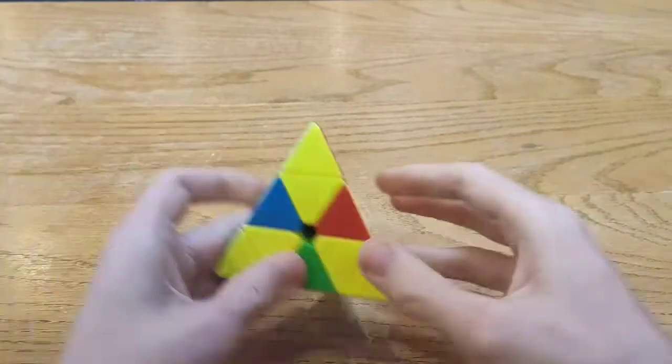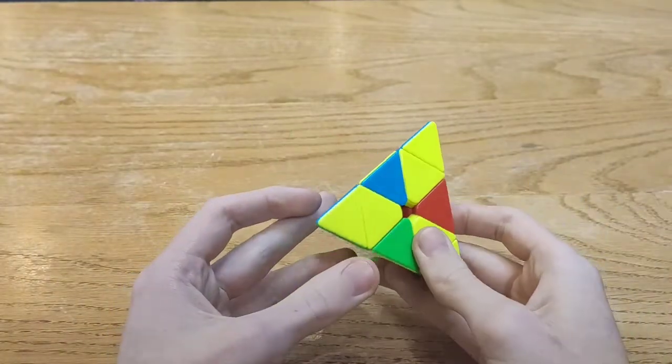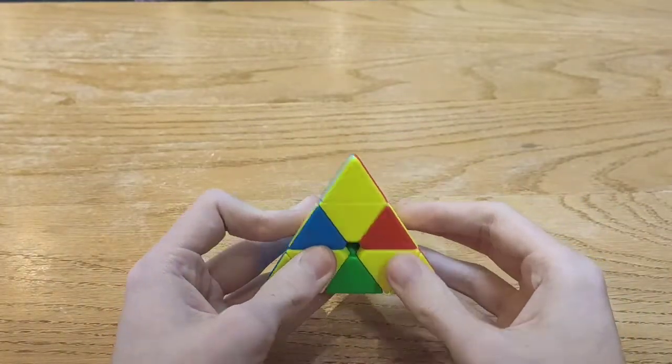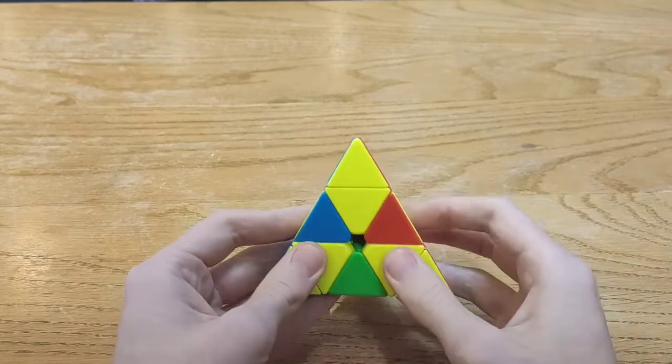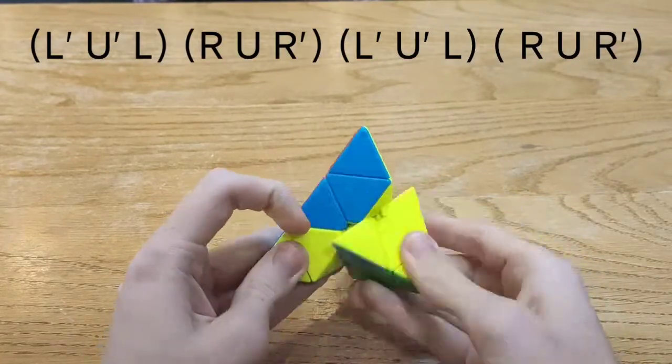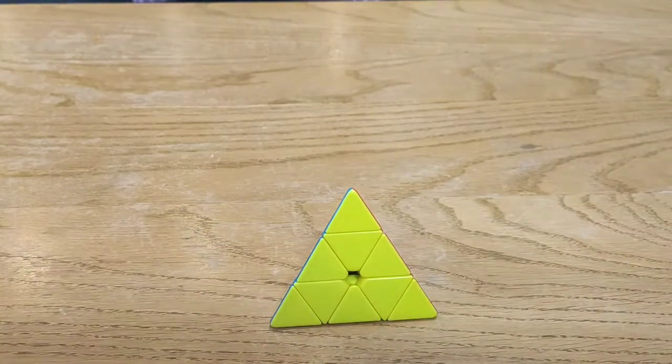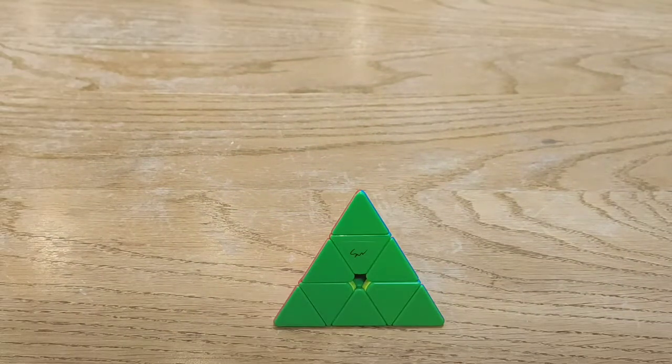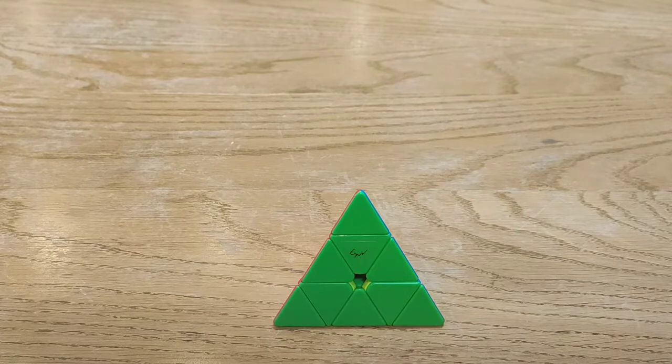And obviously with that you have the same kind of thing from the first algorithm where you can start from the other side. So you can start from the other side and invert the U moves. Give all of those algorithms a try and see which one works best for you.